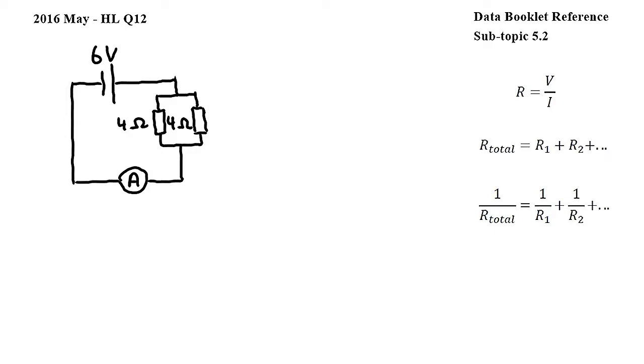In this question we have a circuit with a cell, two resistors, an ammeter and a voltmeter, and we have to find the readings of the ammeter and the voltmeter.